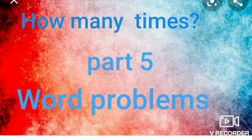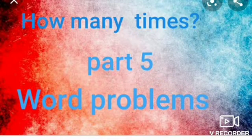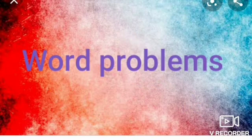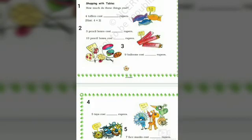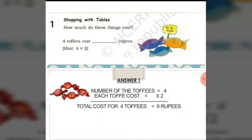Welcome dear students to our Math class. Today we are going to learn Chapter 9, Part 5. We will solve all the sums related to the word problems from this chapter. Now let us solve the first 5 sums from the textbook, page number 131 — Shopping with Tables. For solving these sums, we need to know the multiplication tables. Let us start with our first sum.